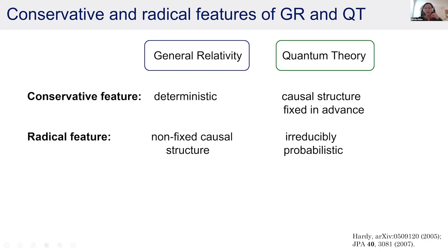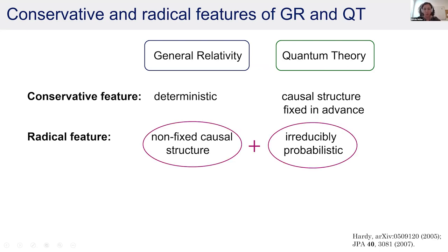In quantum theory we have the opposite behavior: it has a causal structure fixed in advance — normally we simply consider a flat spacetime — and it is irreducibly probabilistic; we just obtain the probability of finding something. If we are trying to find a theory of quantum gravity that merges these two theories, we expect it to have both radical features: a non-fixed causal structure and irreducible probabilism.